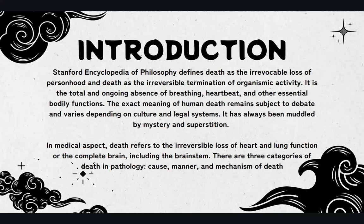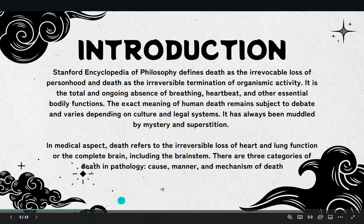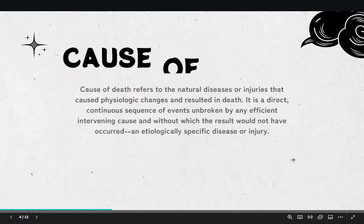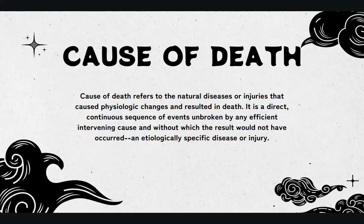There are three categories of death in pathology: the cause, manner, and mechanism of death. The cause of death refers to the natural diseases or injuries that caused sociologic changes and resulted in death. It is a direct, continuous sequence of events unbroken by any efficient intervening cause and without which the result would not have occurred — an etiologically specific disease or injury.